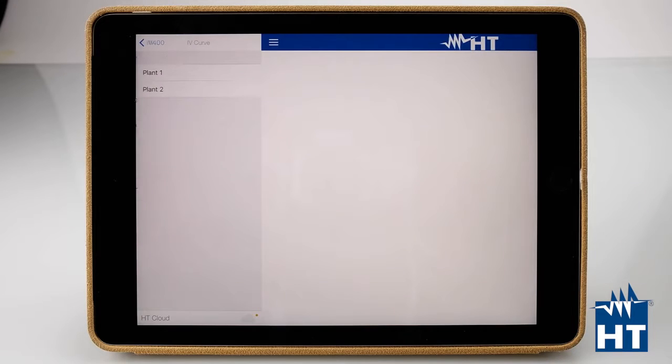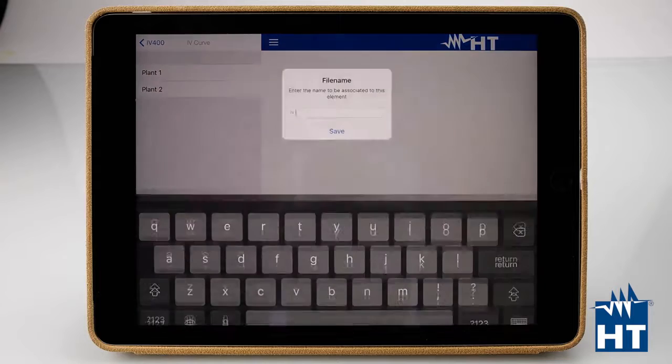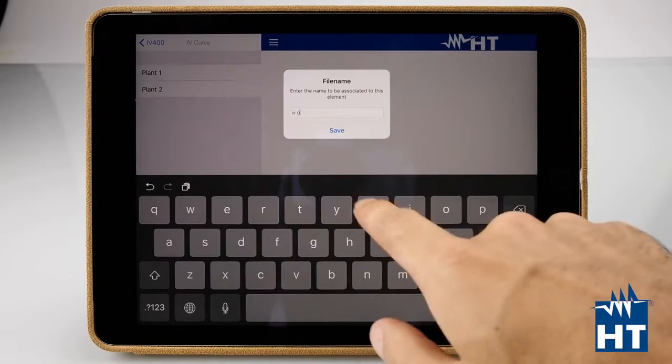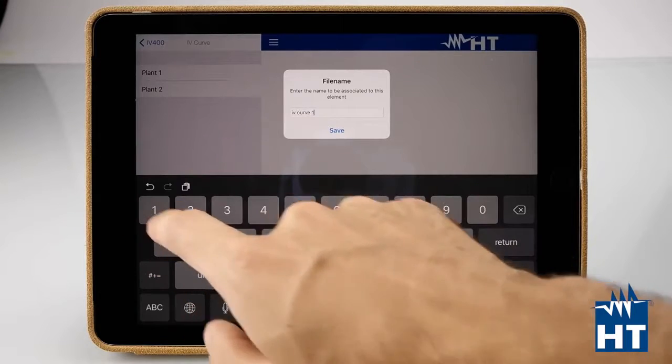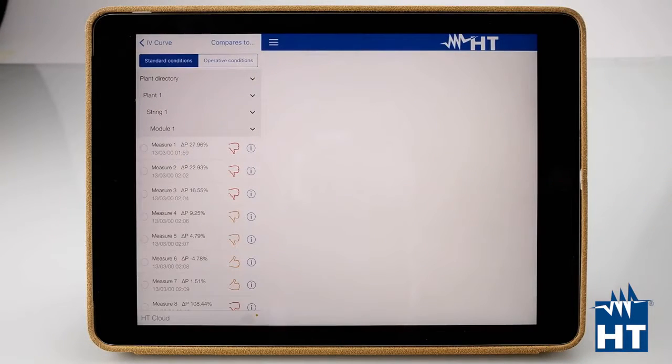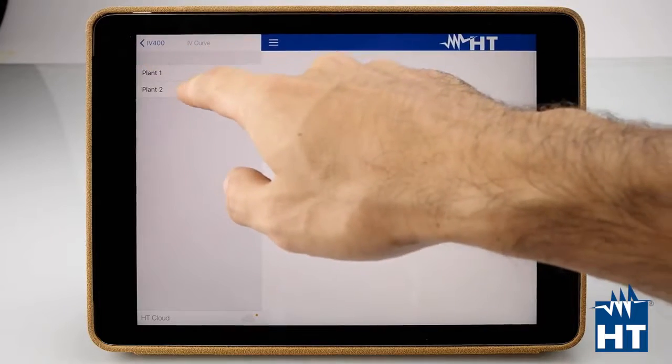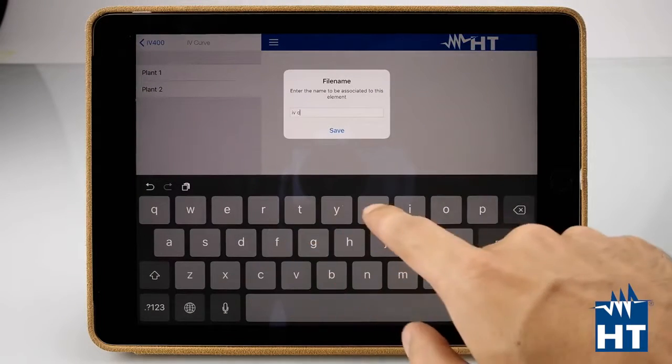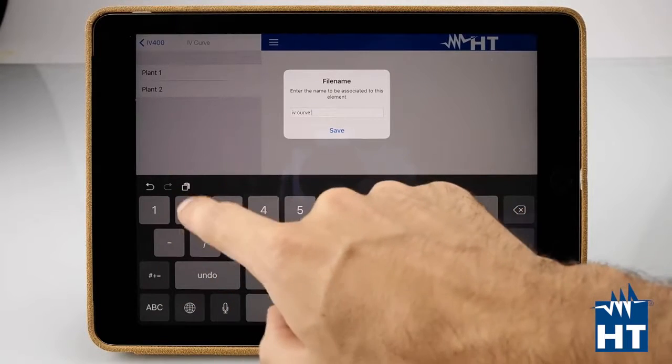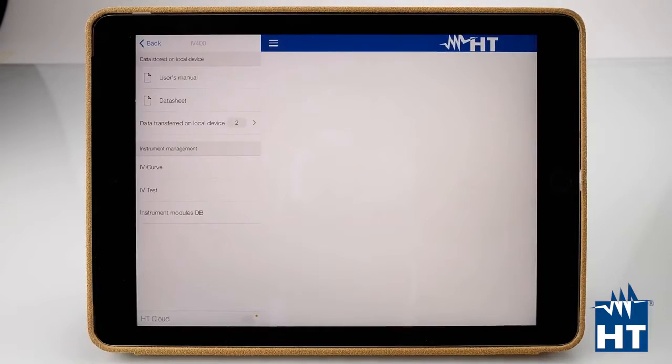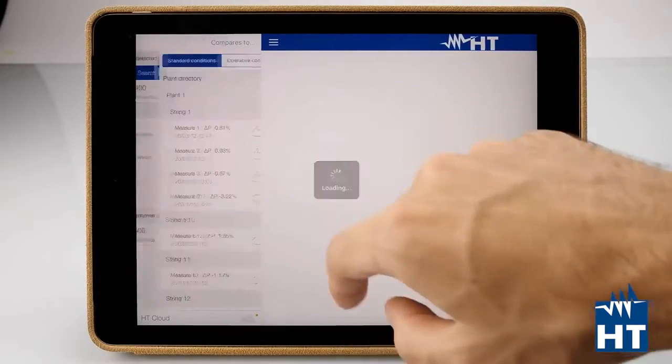So let's download some measurements. We have plant one and plant two that we already gave a name on the IV400 before. So plant one, now the curve is downloading. Then we can give a name, I-V curve one, save. Here we have everything about this measurement campaign. Now let's download the second one. I-V curve two. Now we can come back on the curves.